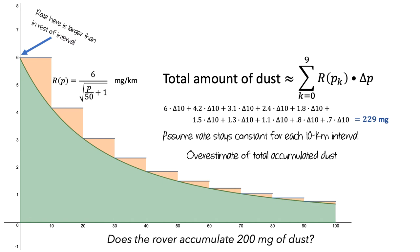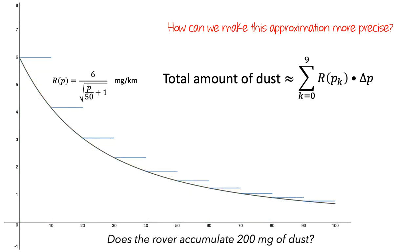This leads us to the question: how can we make our approximation more precise and reduce the amount of error? Let's think about what would happen if we switch from using 10 intervals to 20 intervals. This would mean we'd switch from k equals 0 to 9, to k equals 0 to 19. If we used 20 intervals, each would be 5 kilometers long.